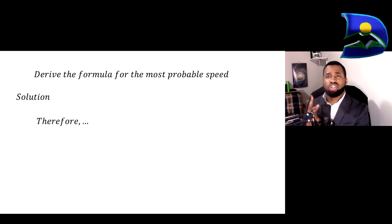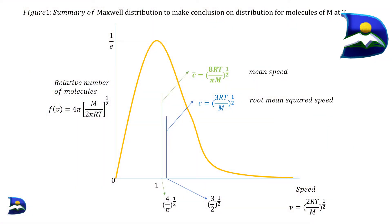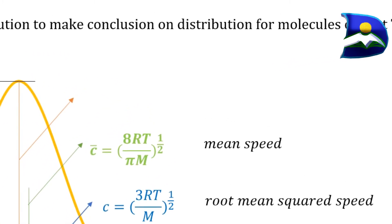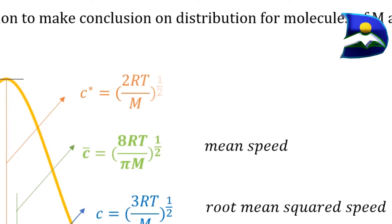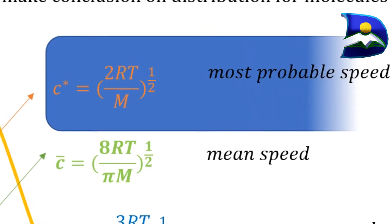This is how you derive the formula for the most probable speed of molecules in a specific gas. The most probable speed depends on temperature and the molecular weight of that particular molecule — whether it's nitrogen, oxygen, or any molecule existing in the gas phase, such as air. This is applicable to the Maxwell-Boltzmann distribution curve, where the most probable speed is the peak — the maximum — and has the least velocity compared to the mean speed and the root mean squared speed.